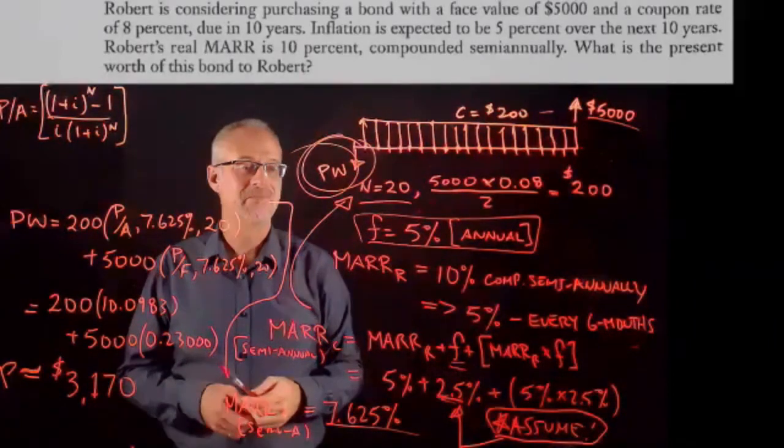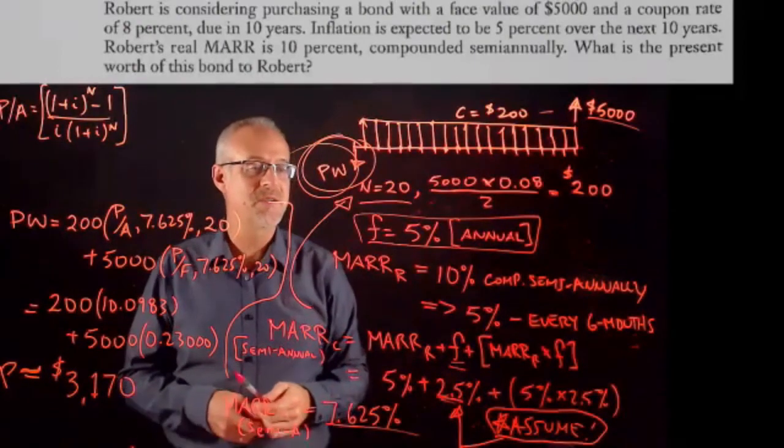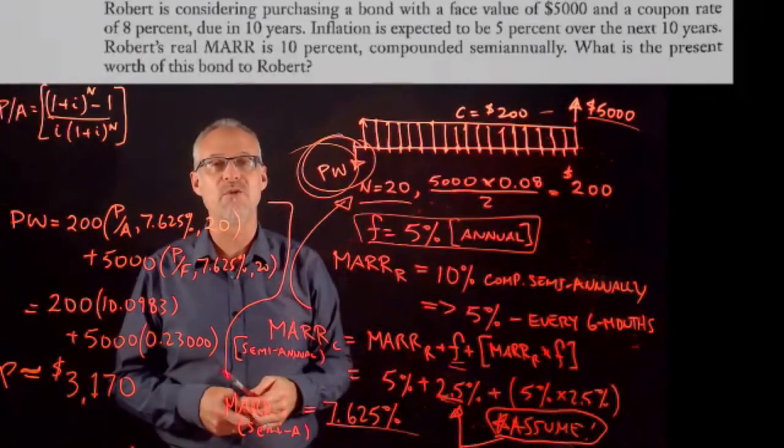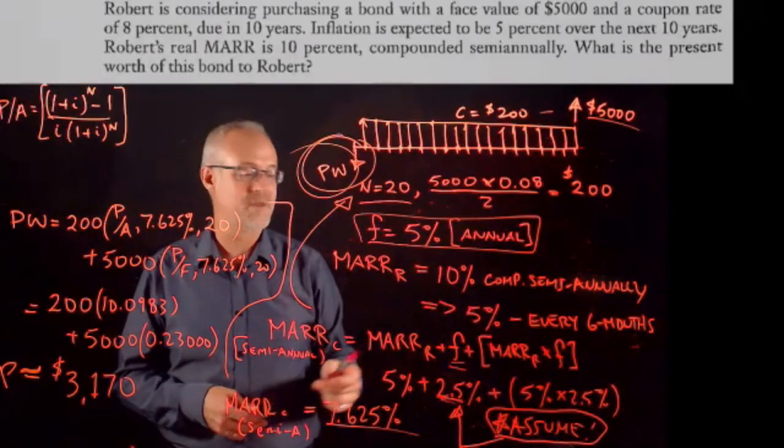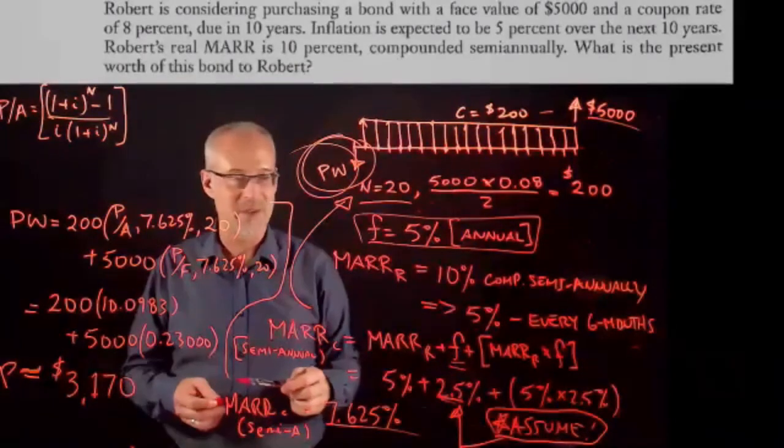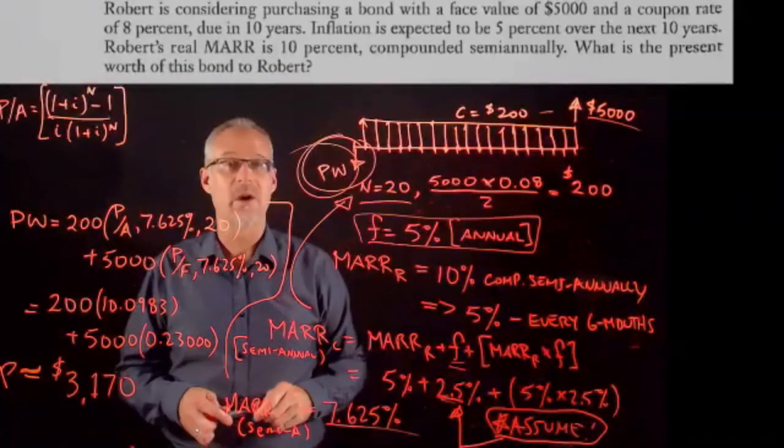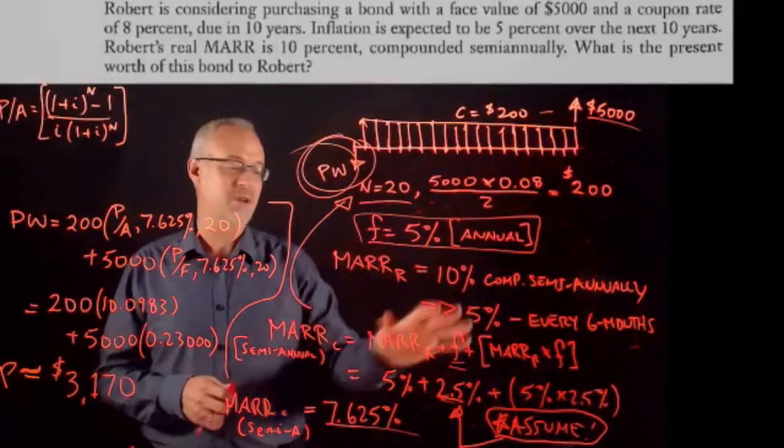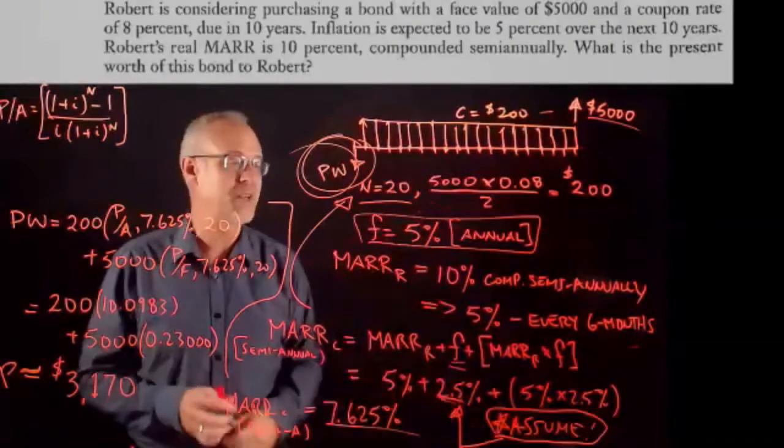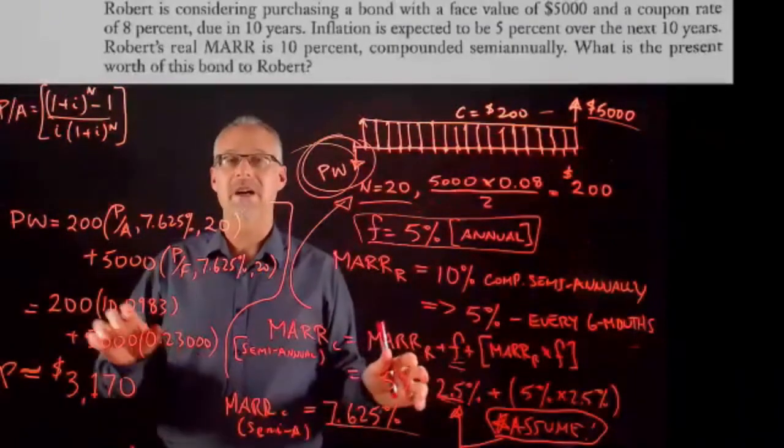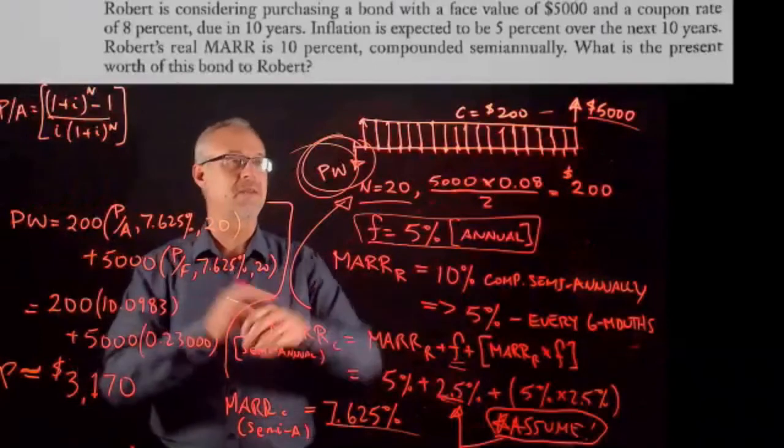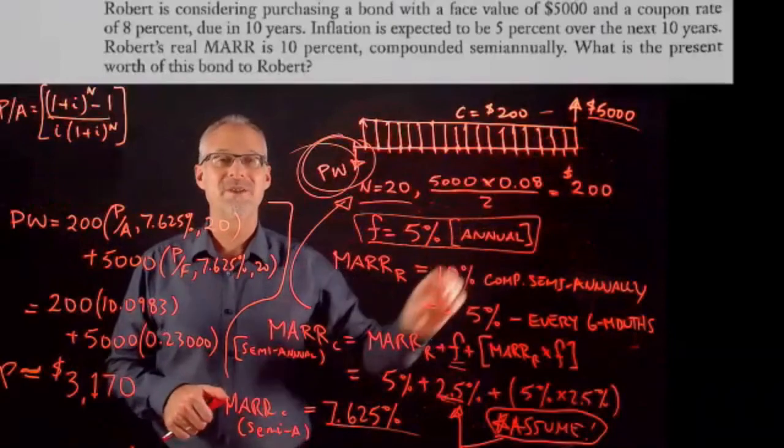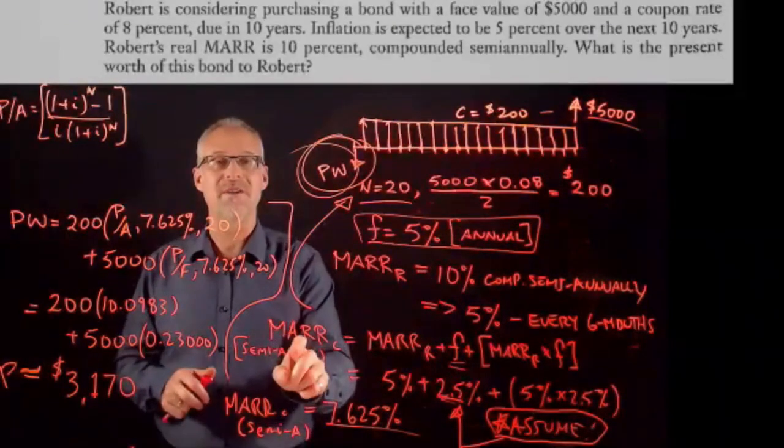You're going to take the square root of 1.05 to calculate the effective six-month rate on that inflation. I simplified it a little bit, but what's important is that you recognize that the cash flows in a bond are current dollars. So we need to calculate the current MAR.